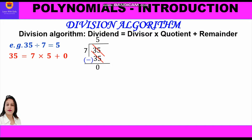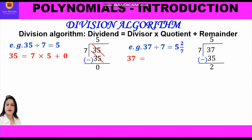And we know that 35 equals 35. Similarly, if we divide 37 by 7, we get the quotient 5 and remainder 2. Further we can check our answer by putting these values in the division algorithm.